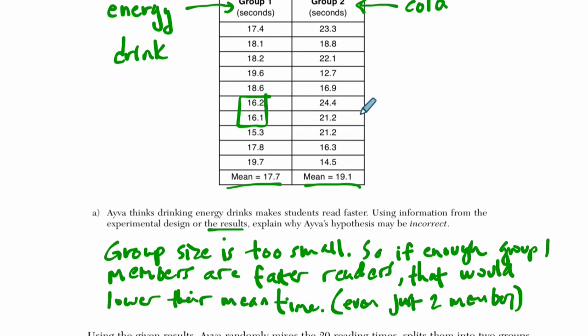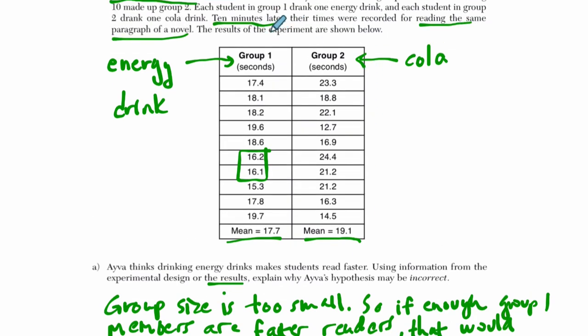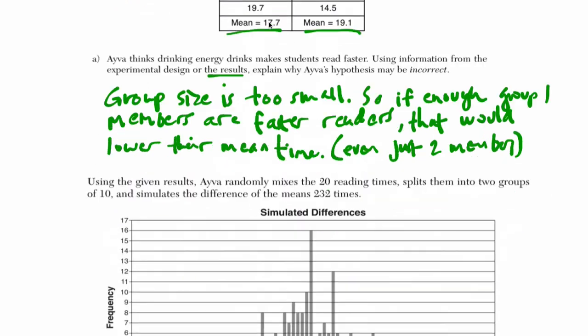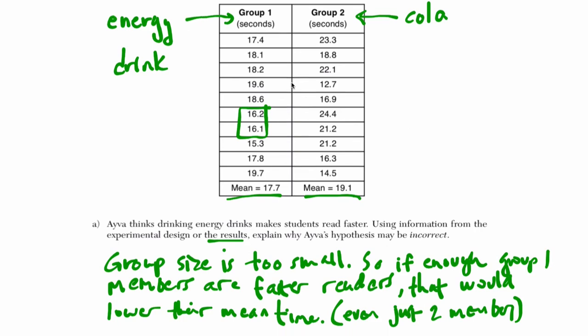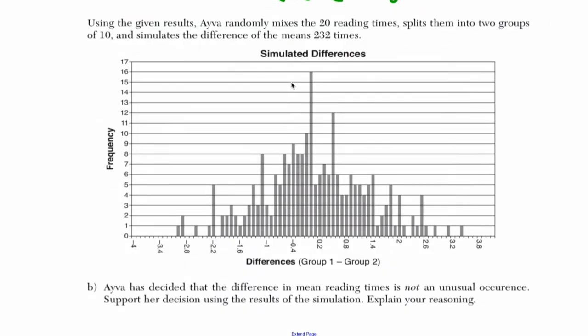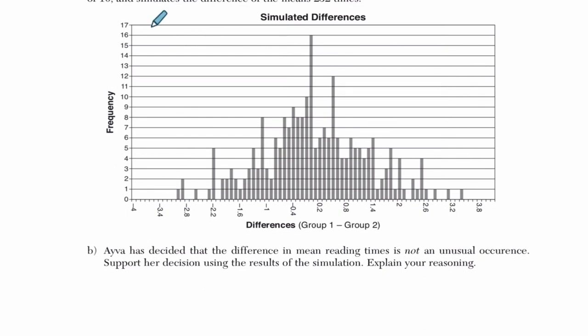Another issue, of course, is the time. How did she pick 10 minutes later? Where does that come from? So that's something to think about as well. But I would stick to the group size. That's generally something you could use to explain why an experiment setup is incorrect. All right, so here, what does she do? She randomly mixes 20 reading times, splits them into two groups, sub 10, and simulates the difference of the means 232 times.